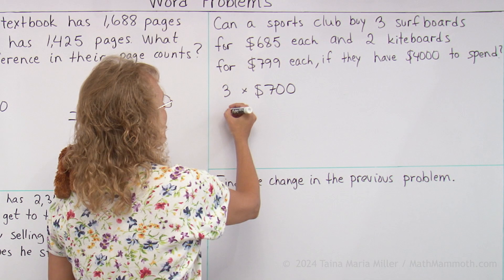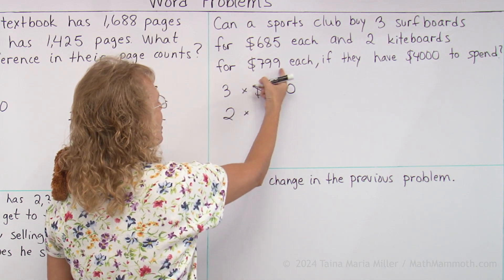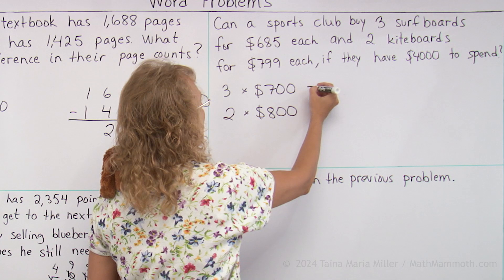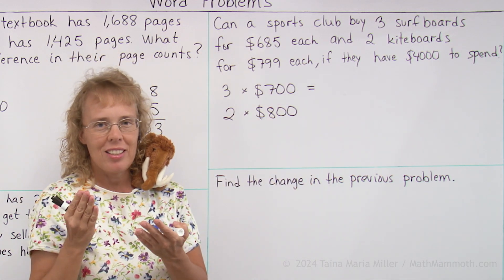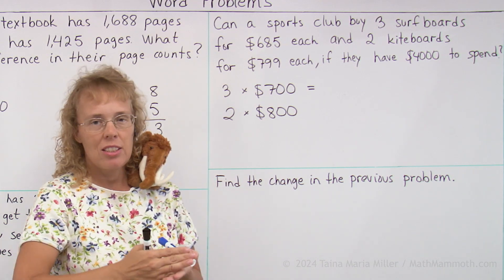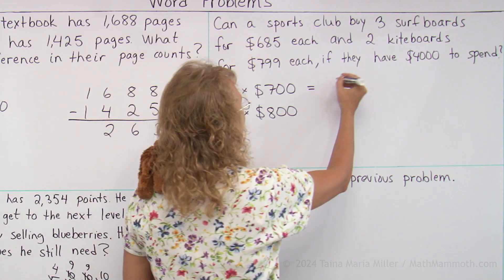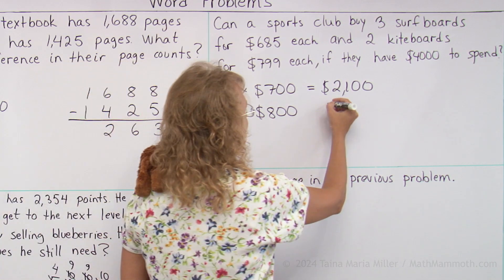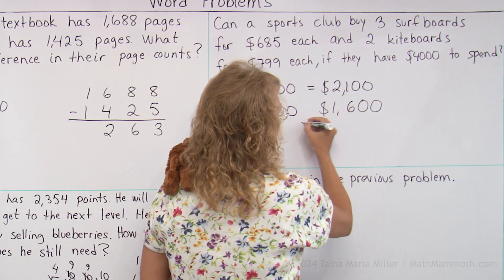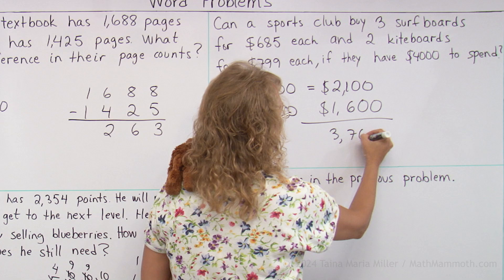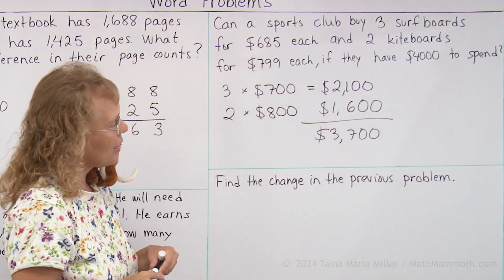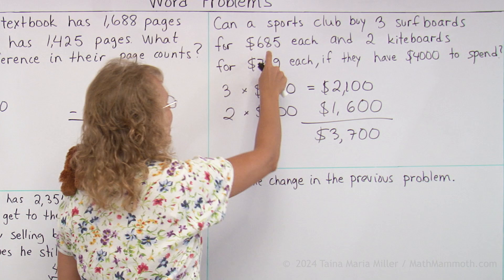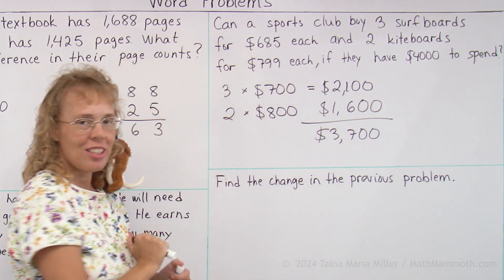We take 3 surfboards — $685 rounded to the nearest 100 is $700, rounded up. And 2 kiteboards — $799 rounded up to $800. What would be 3 times $700? You can add: 700 plus 700 plus 700 equals 2100. And 2 times $800, or 800 plus 800, is $1600. The total is about $3700. So it looks like they will be able to buy those things, and indeed they can, because the real prices are a little less than the numbers used in the estimation.